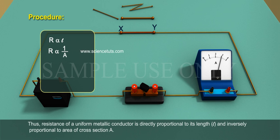Thus resistance of a uniform metallic conductor is directly proportional to its length L and inversely proportional to area of cross section A.